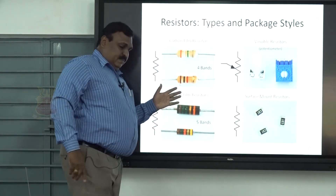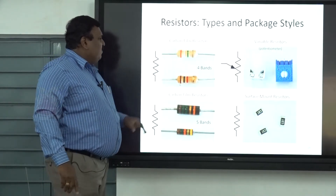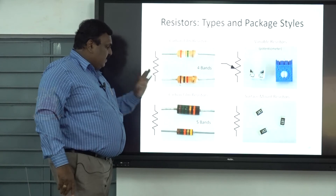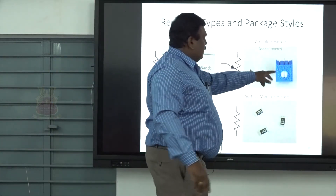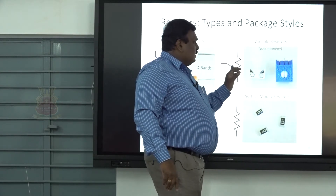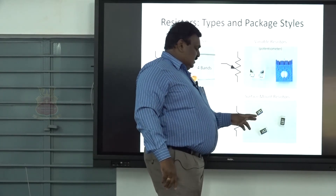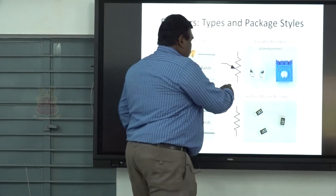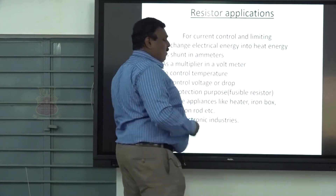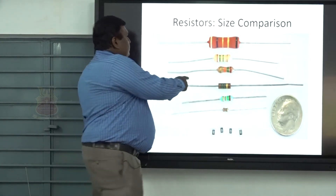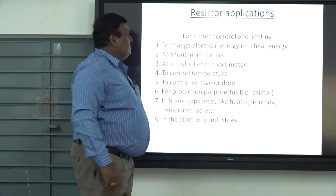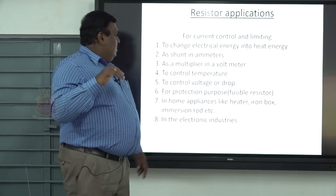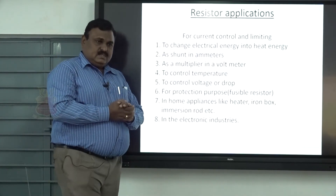What is the physical appearance of this resistance? This is the carbon film resistance with four bands. Some special types of carbon film resistance have five bands. Then variable resistance like potentiometers. Another one is the surface mount resistance - it is a modern resistance mainly used in cell phones, microchips, or microcircuits.